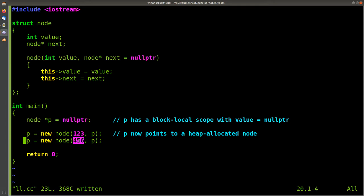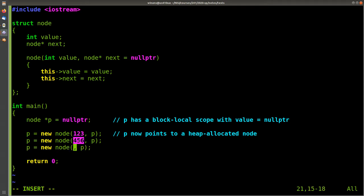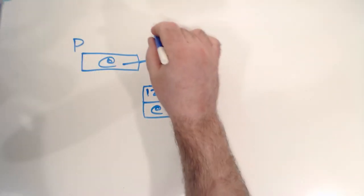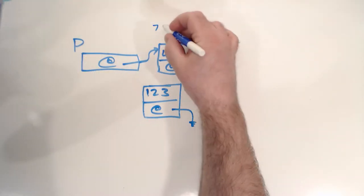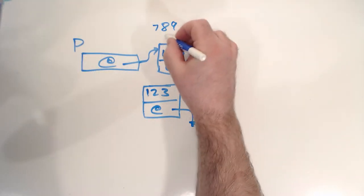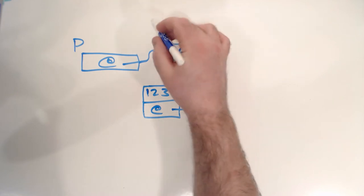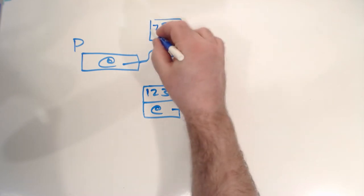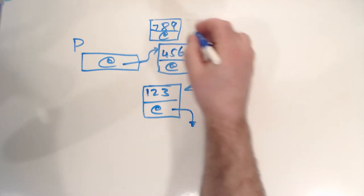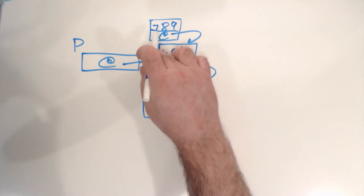As you can see, if you keep repeating this operation, you're essentially pushing things onto the front of your linked list. So this would then push a 7,8,9 node in front of the 4,5,6 node, and this would just keep on going. This is the order of operations you need to execute if you want to use a linked list to implement a stack when pushing items into the front of the linked list.